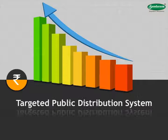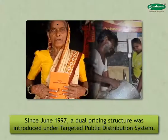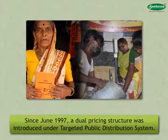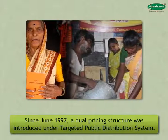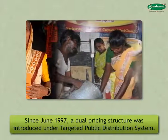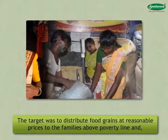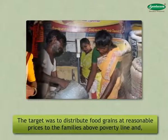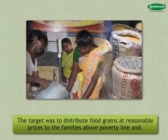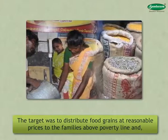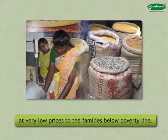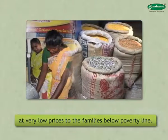Since June 1997, a dual pricing structure was introduced under the Targeted Public Distribution System. The target was to distribute food grains at reasonable prices to families above poverty line, and at very low prices to families below poverty line.